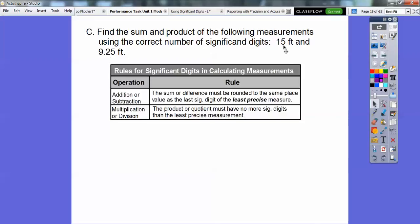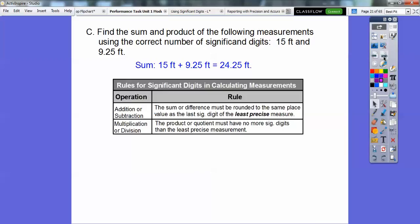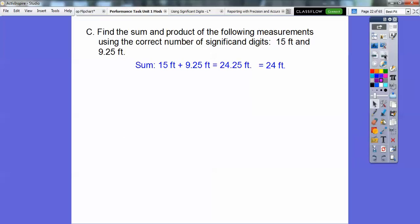So we have to round the sum in the ones position. The product or quotient must have no more digits than the least precise measurement. No more significant digits. This is the least precise measurement. It has two significant digits. So whatever answer we get, we've got to round it to two significant digits. So here's the sum. We get 24.25. So the sum or difference must be rounded to the same place values. We've got to round it to the one spot because 15 is rounded to the one. So we're going to round 24.25 to just 24.